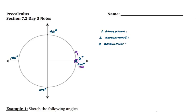Two revolutions would be 720 degrees, and three revolutions would be 360 plus 720, which is 1080 degrees. We could also do parts of rotations — half a revolution counterclockwise would be 180 degrees, a fourth of a revolution would be 90 degrees, and so on. You can break up the circle into many different angle increments.